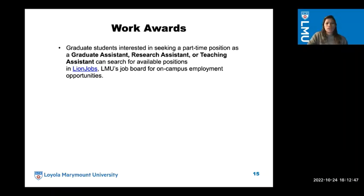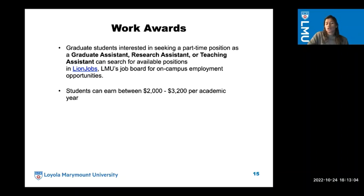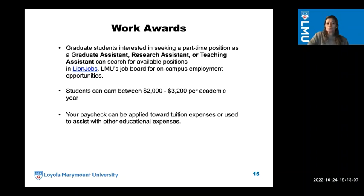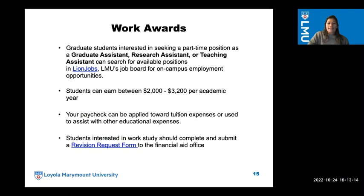Work awards: graduate students interested in a part-time position as a graduate assistant, research assistant, or teaching assistant can search for available positions in Lion's Job — LMU's job board for on-campus employment. Students can earn between $2,000 and $3,200 per academic year. Your paycheck can be applied toward tuition expenses or used to assist with other educational expenses. Students interested in work-study must complete and submit a revision request form to the financial aid office, which can be found on our LMU financial aid website.